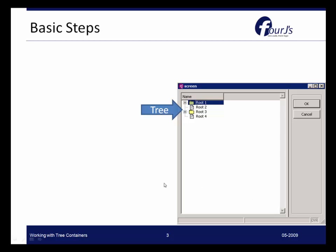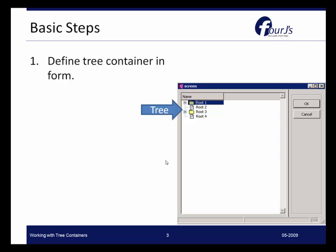The basic steps for creating and working with a tree container are: first, define the tree container in a form — as we can see in this simple example. The next step is to define an array to hold the tree data, so in your 4GL code you'll have a definition of an array that's going to be mapped to this particular tree container.